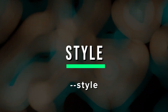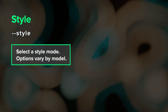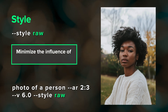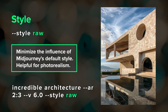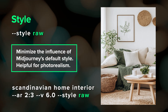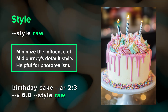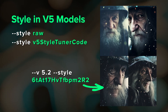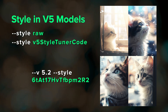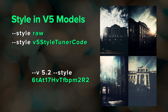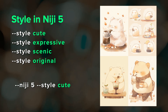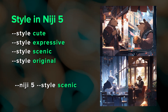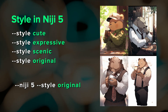Next, the style parameter — this is not the same as style reference. Style shows up as mode in your default settings. Many people like to use style raw to minimize the influence of Midjourney's aesthetic on the results, which is helpful for more photorealistic images. The style parameter has been around since version 5.1. The Niji 5 model also has different style modes that affect aesthetics. To my knowledge, the V6 models only have style raw.